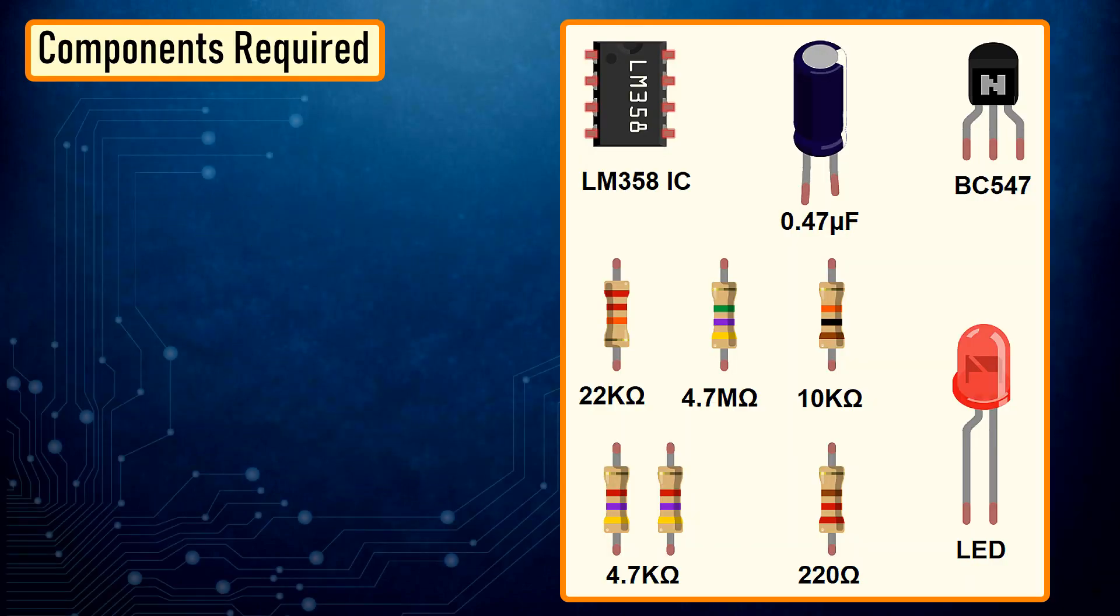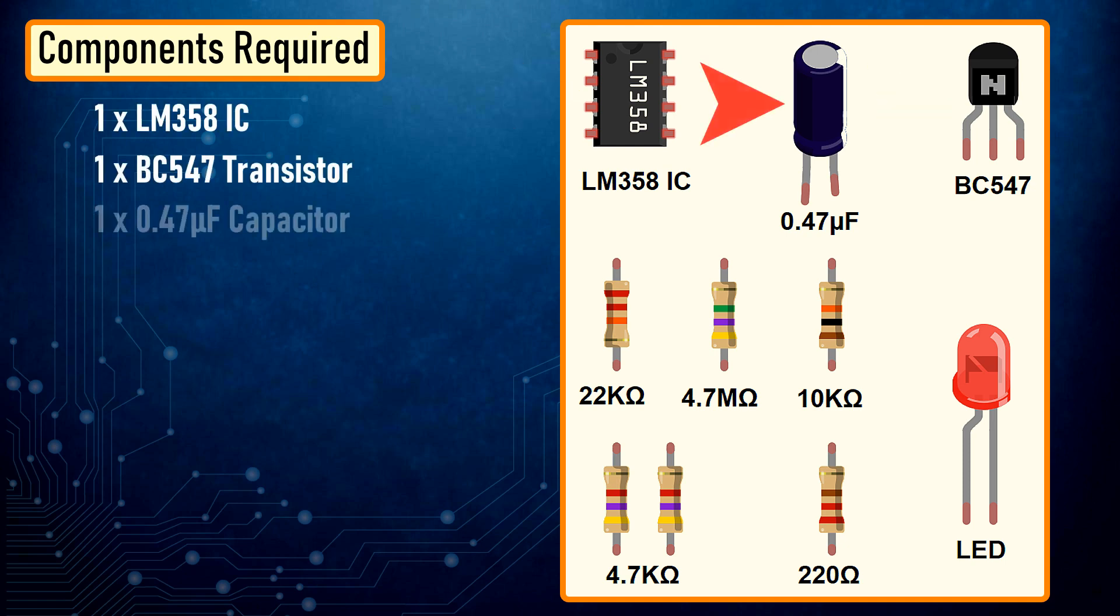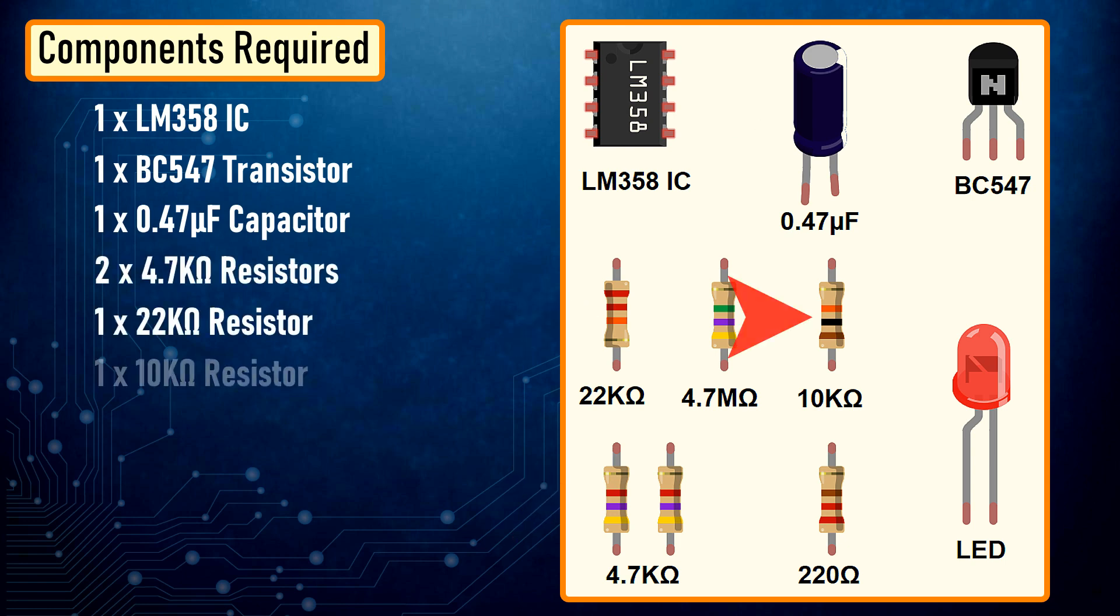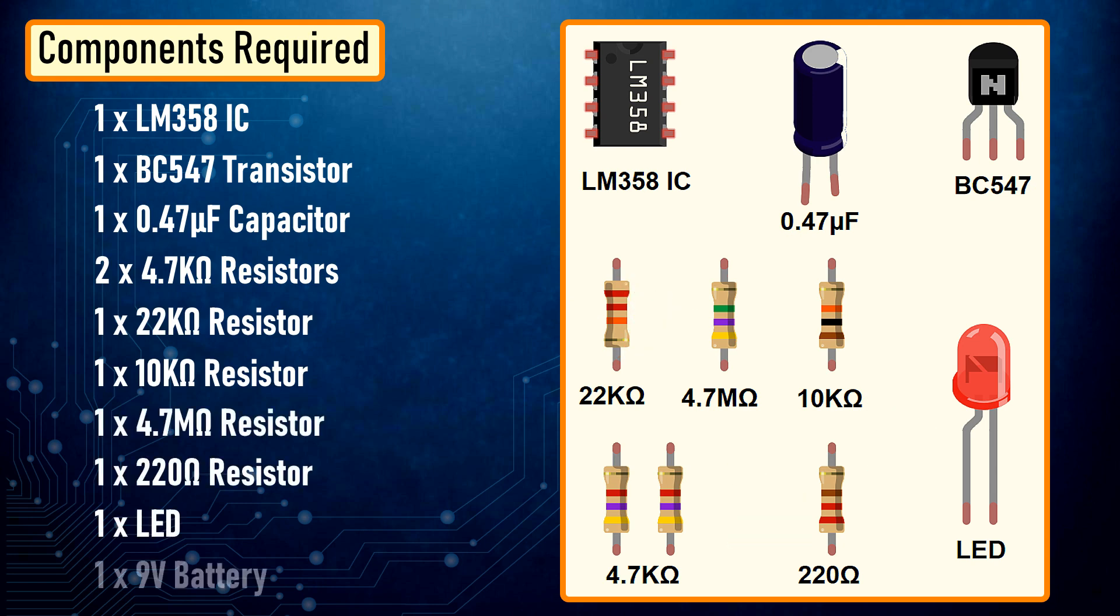For the non-Arduino build we need one LM358 IC, one BC547 transistor, one 47 microfarad capacitor, two 4.7 kiloohm resistors, one 22 kiloohm resistor, one 10 kiloohm resistor, one 4.7 megaohm resistor, one 220 ohm resistor, one LED, and a 9 volt battery.